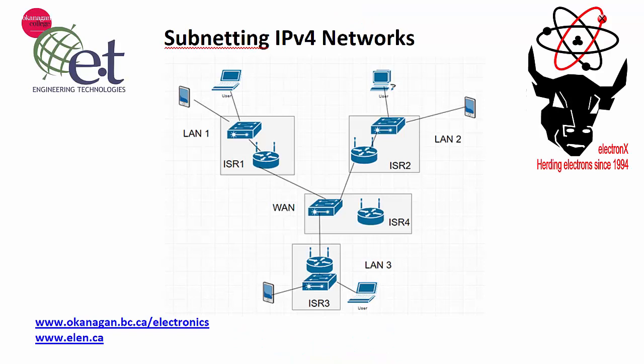Welcome to the electronics channel. I'm David Williams. In this video I'm going to talk about subnetting IPv4 networks. Subnetting is the process of taking a defined network and splitting it up into two or more smaller networks. For example, let's say I have a block of addresses — a network defined as 192.168.7.0/24.